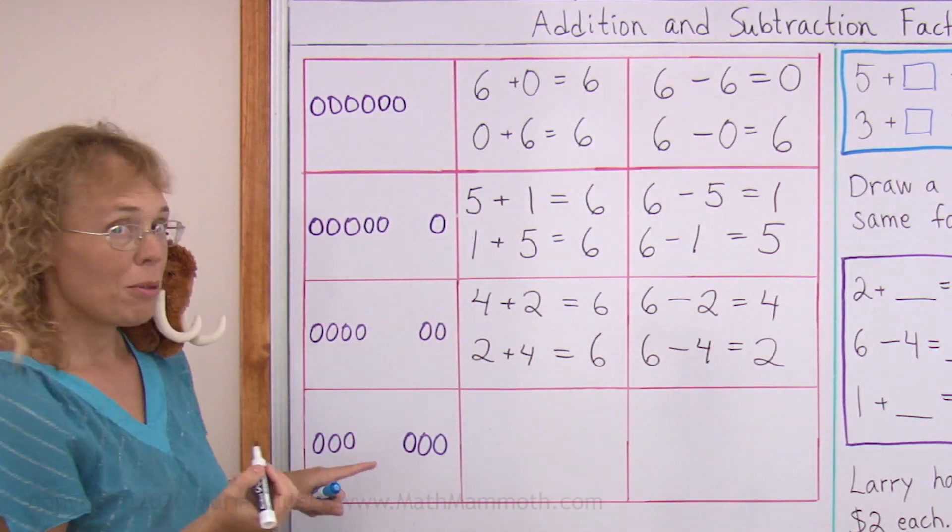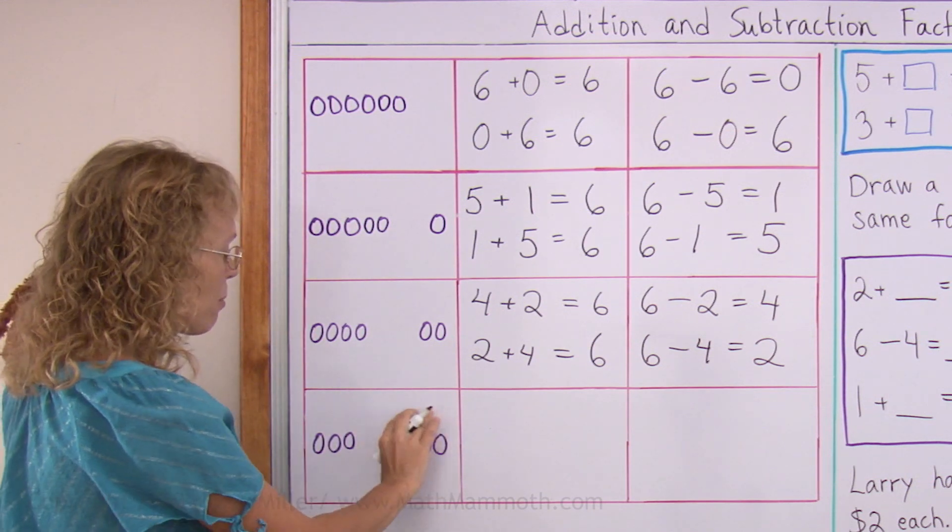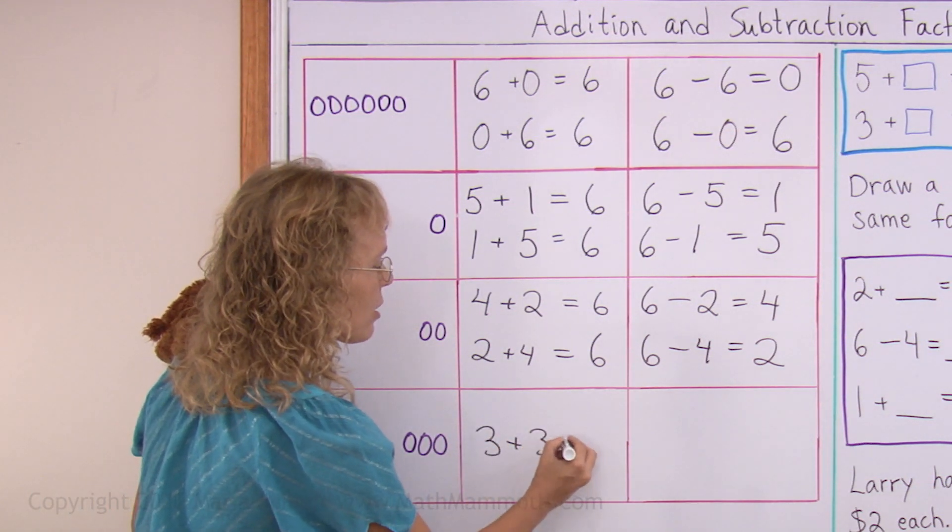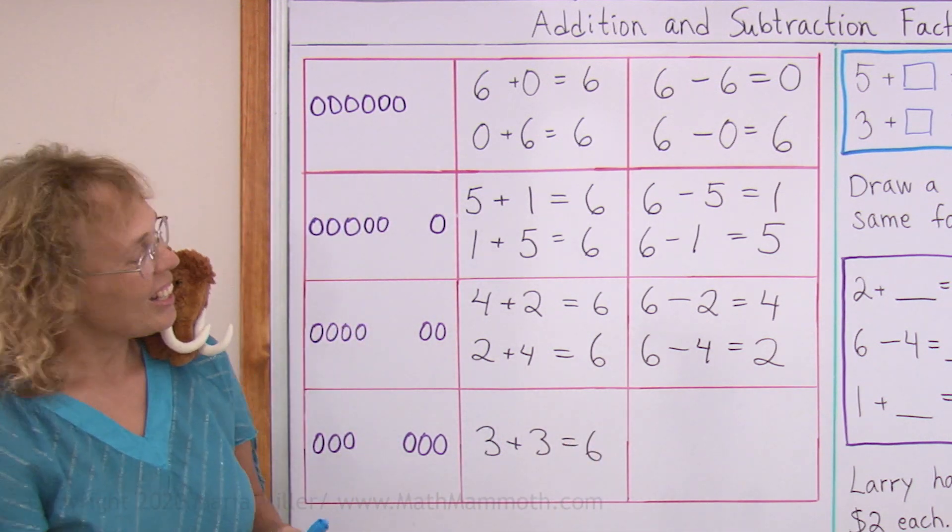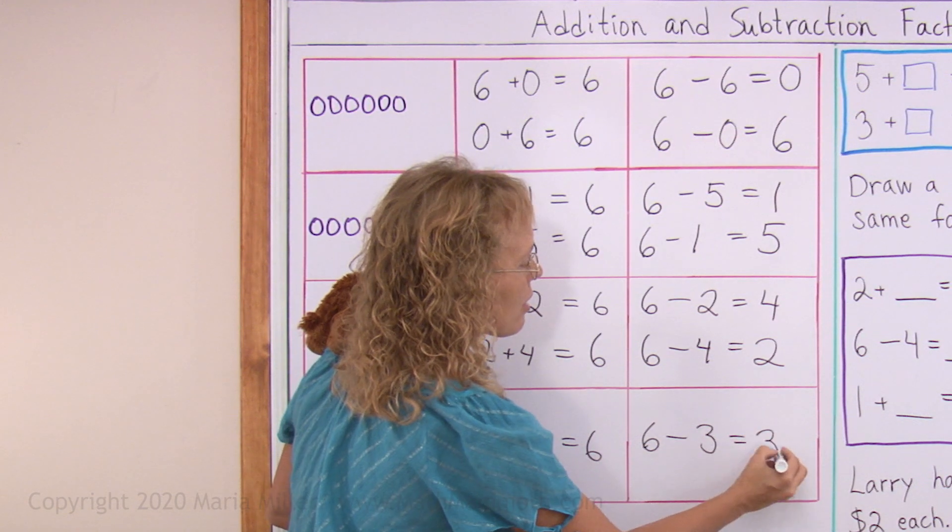And then one more. This is a smaller fact family because I have three and three, the same amount in both groups. So I have three plus three equals six, just one addition and just one subtraction: six minus three equals three.